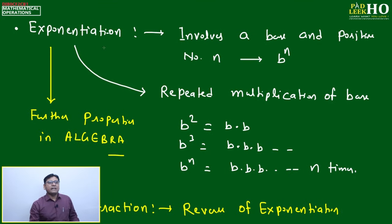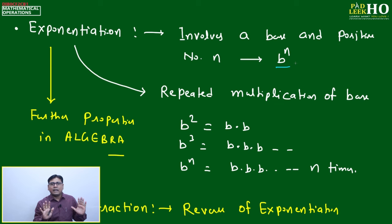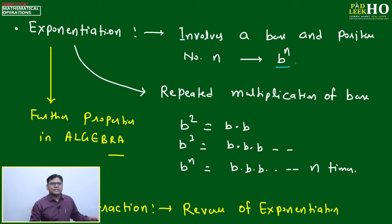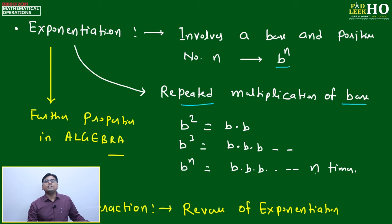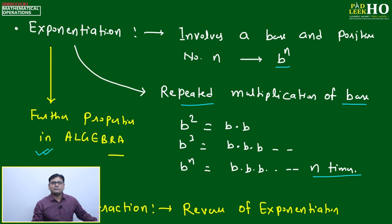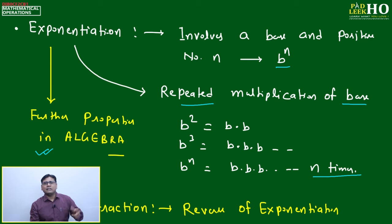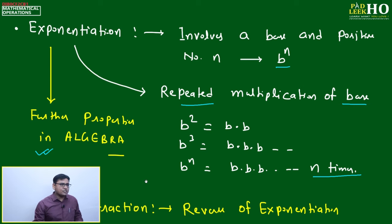Exponentiation: if a base and a positive number are available — one as the base and another as the power — the meaning of power is simply repeated multiplication of the base. For example, b² = b×b, b³ = b×b×b, bⁿ = b×b×...×b (n times). That is called exponentiation. Further properties of exponents are part of algebra and will be discussed in detail in later sessions.